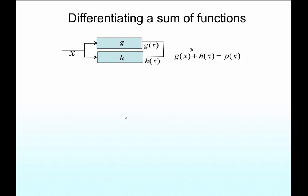Let's move towards differentiating a sum of functions — to begin with, two functions. Here is a function g, another function h. They're given the same input x, and out comes g of x from g and h of x from h. These are added together to give a new function p of x. What we need now is the derivative of p of x — in other words, the derivative of the sum of the two functions.